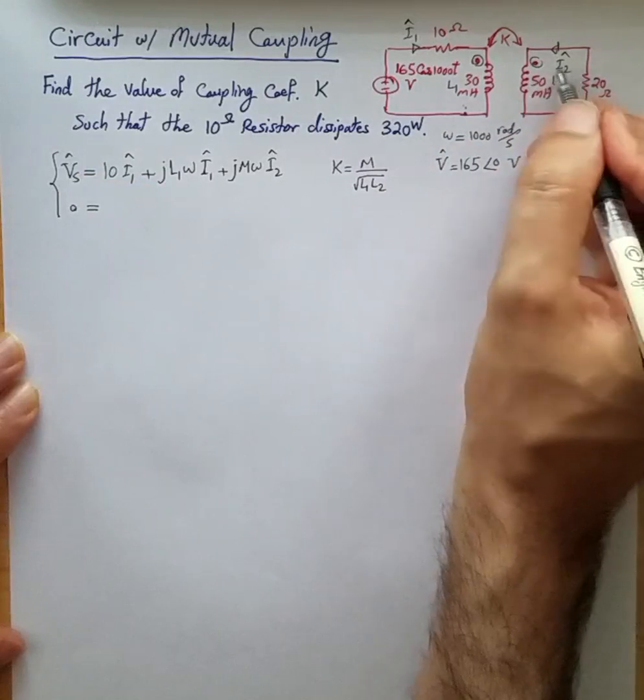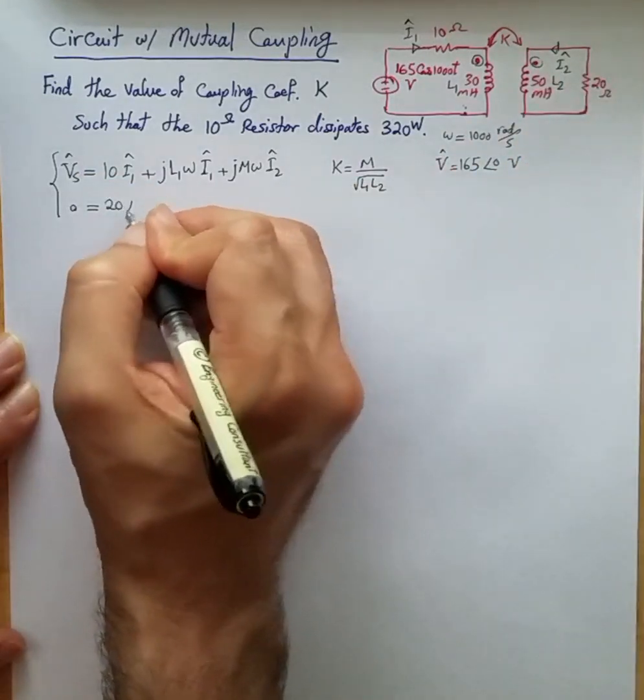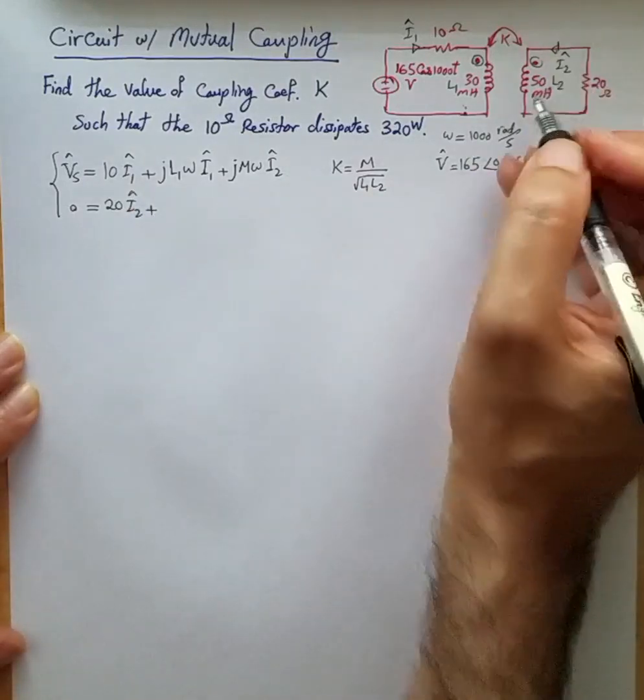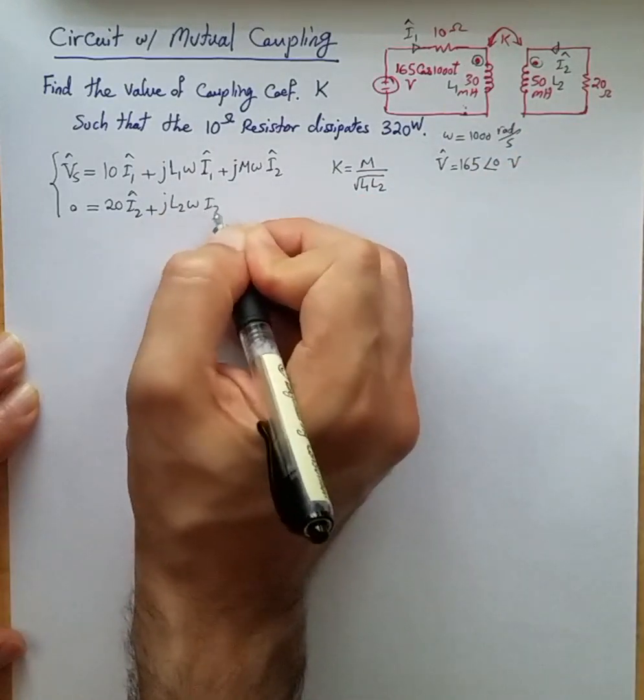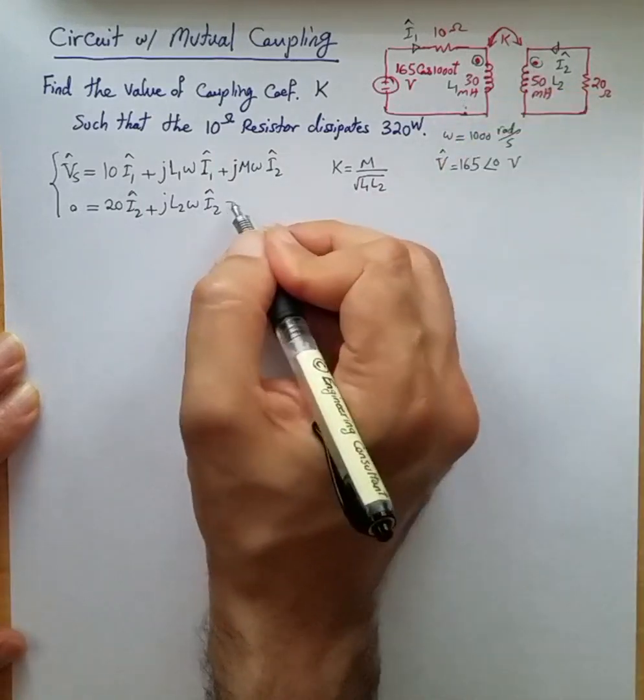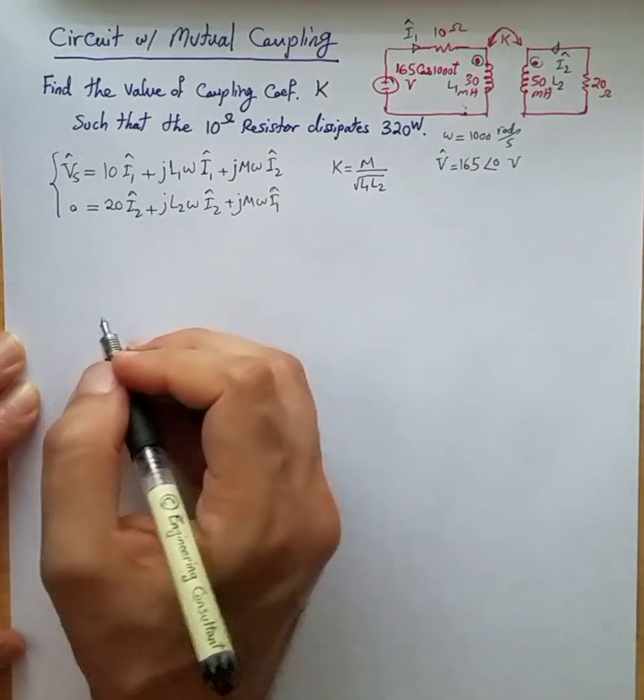Current I2 phasor is flowing through 20 ohms, so we have 20 times I2 phasor, plus it is going through this 50 millihenry inductor, so we have jL2ω I2, and then similar to the first loop we have plus jMω I1.